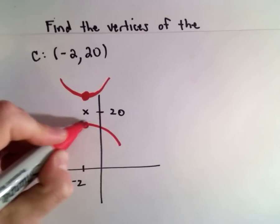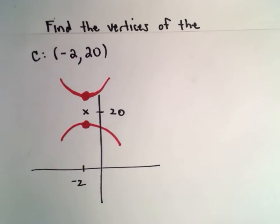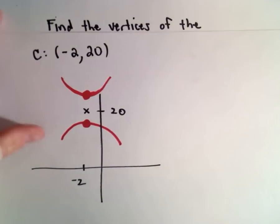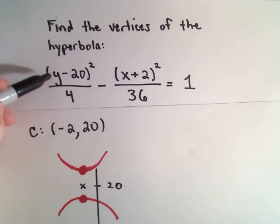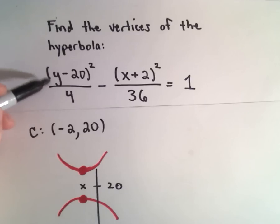So I'm looking for the vertices. Well, to get the vertices, what we do is, for our hyperbola, we look at the first term when we have it in standard form.